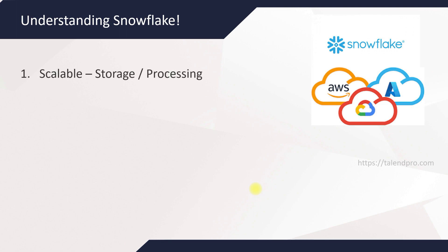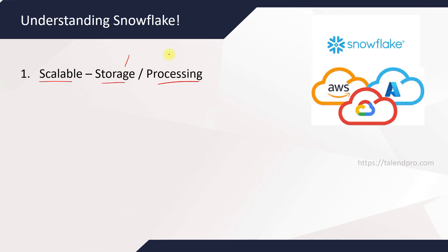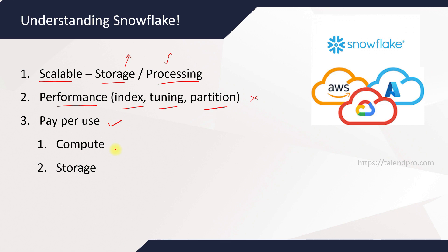Moving on, let's understand Snowflake. Snowflake is highly scalable when it comes to storage and processing. Like RA3 in Redshift, Snowflake is essentially like RA3 combined with serverless, where your storage and processing are decoupled and can be scaled at any time. When it comes to performance, users and developers don't have to worry about it because the Snowflake engine is designed so that you don't have to worry about index tuning or partitioning — Snowflake automatically takes care of all performance-related optimizations.